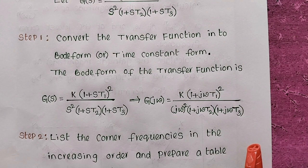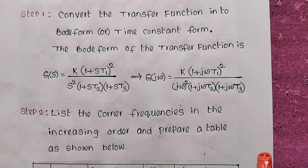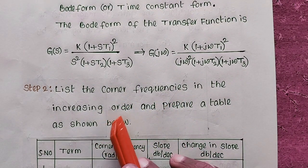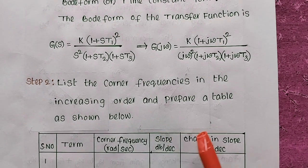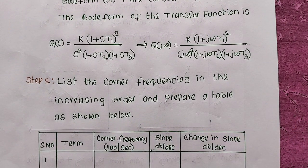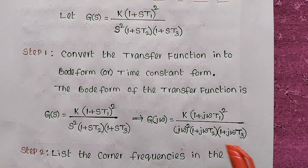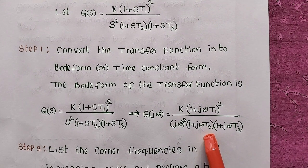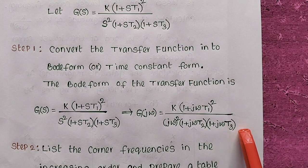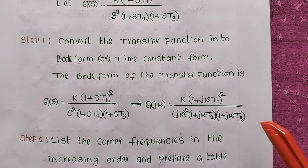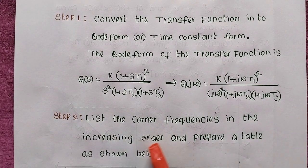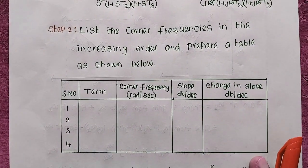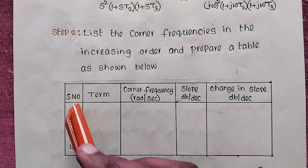Step 2 is to list the corner frequencies in increasing order and prepare a table. We identify the corner frequencies from the transfer function — 1/T1, 1/T2, and 1/T3 are the three corner frequencies. We list them in increasing order and prepare a table with columns: serial number, term, corner frequency, slope, and change in slope.